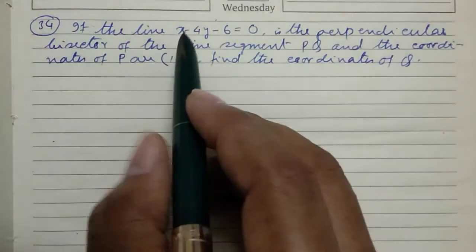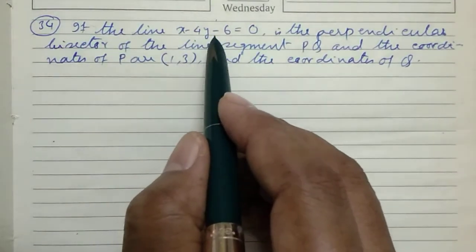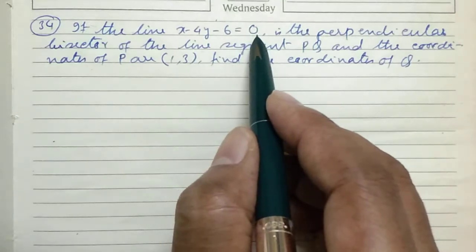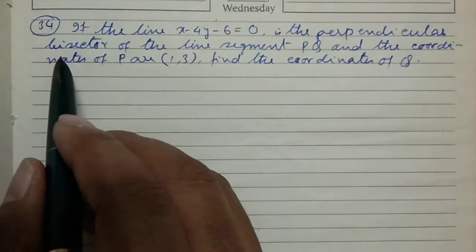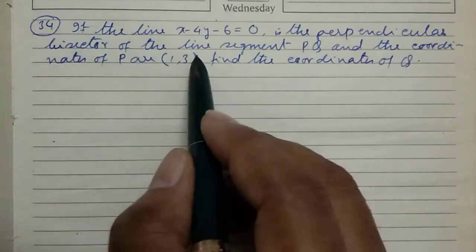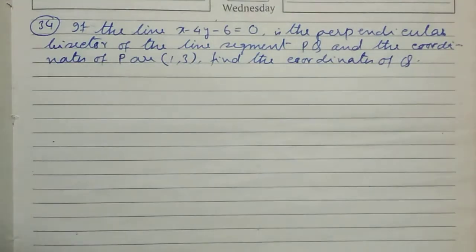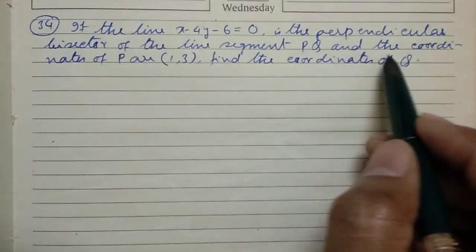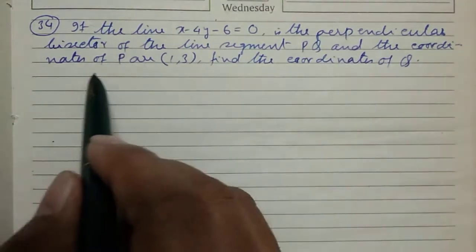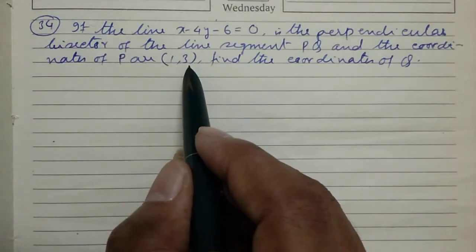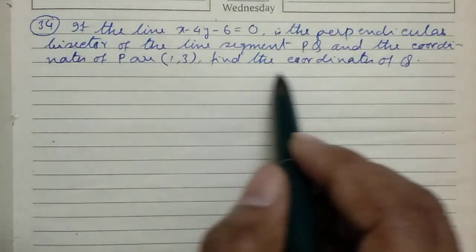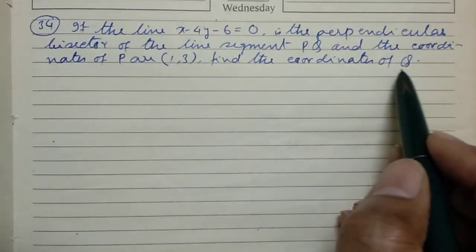If the line x minus 4y minus 6 equals 0 is the perpendicular bisector of the line segment PQ, and the coordinates of P are (1, 3), find the coordinates of Q.